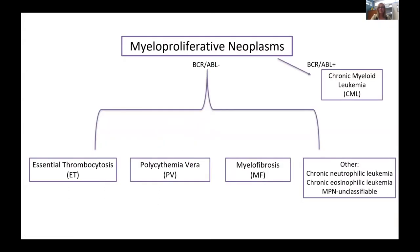The term MPNs really refers to a wide range of disorders. The first way I split these out is those with this chromosome abnormality, the BCR-ABL chromosome or Philadelphia chromosome. That diagnosis is chronic myeloid leukemia or CML — really a totally separate disorder from what we're talking about today. Today we're focusing on the BCR-ABL negative MPNs: essential thrombocytosis with elevated platelets, polycythemia vera with elevated hemoglobin or hematocrit, and myelofibrosis. There are also rarer MPNs like chronic neutrophilic leukemia, chronic eosinophilic leukemia, and MPN unclassifiable.